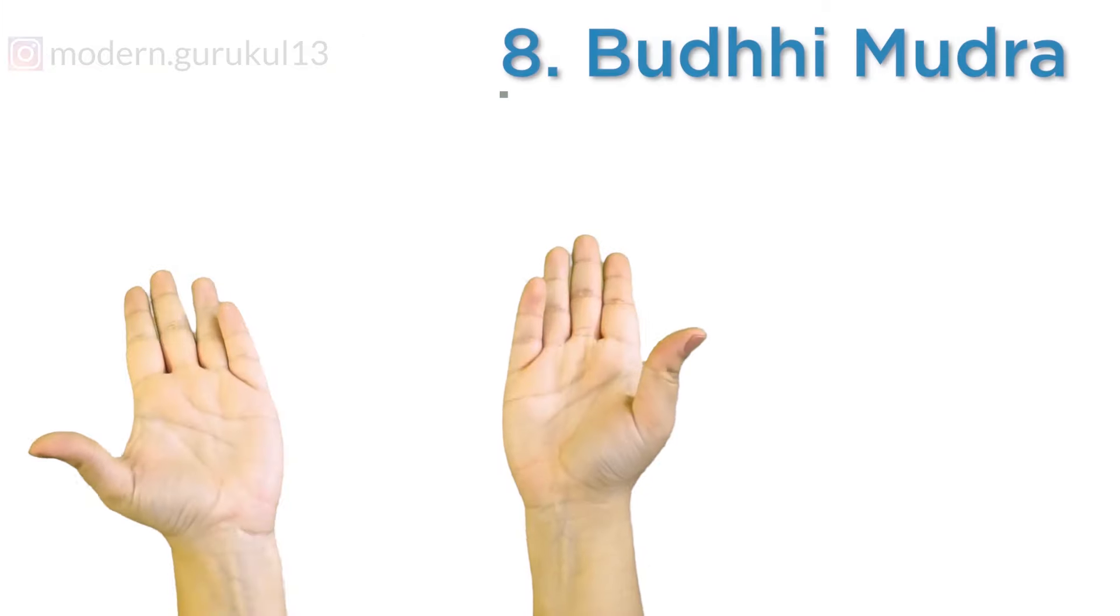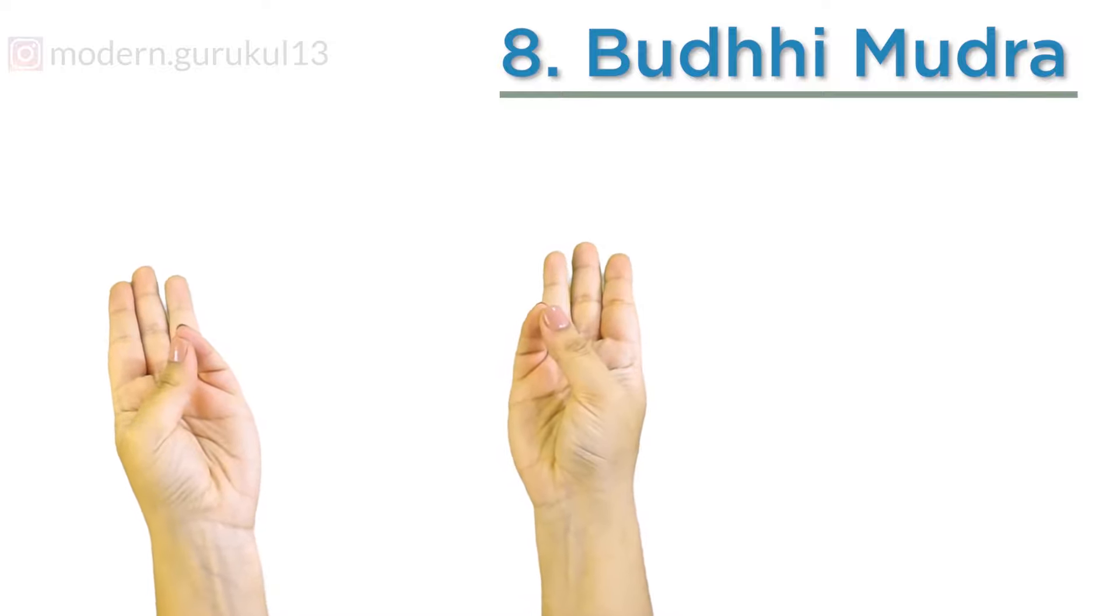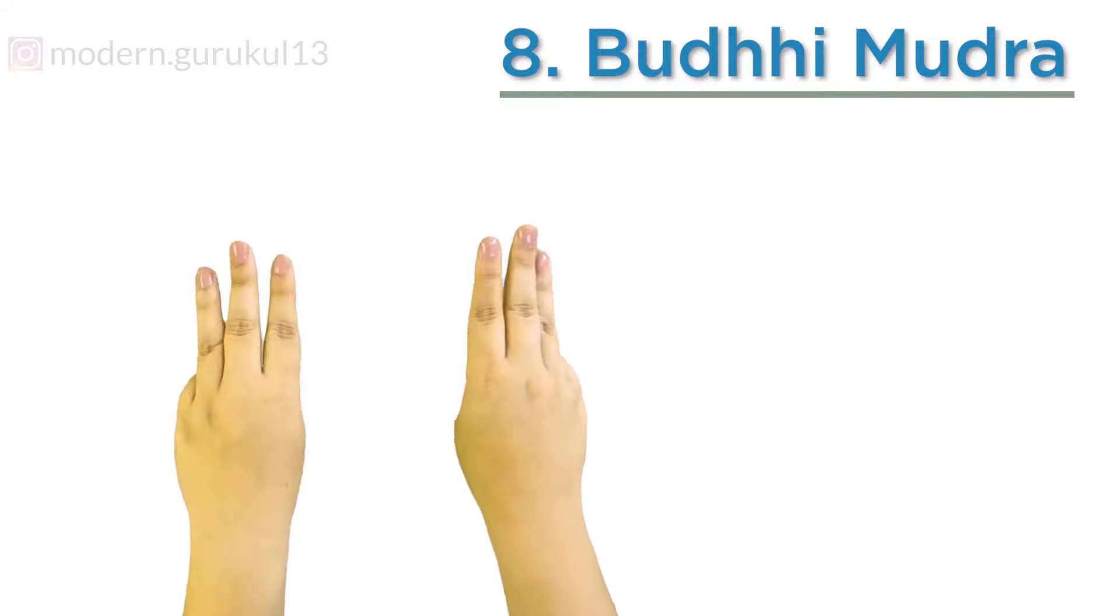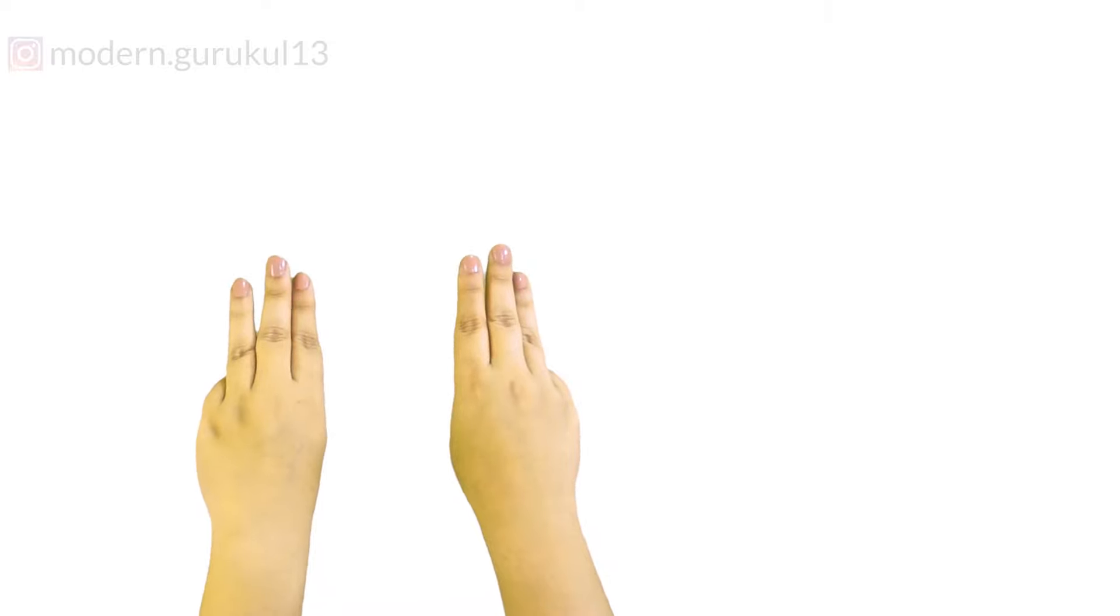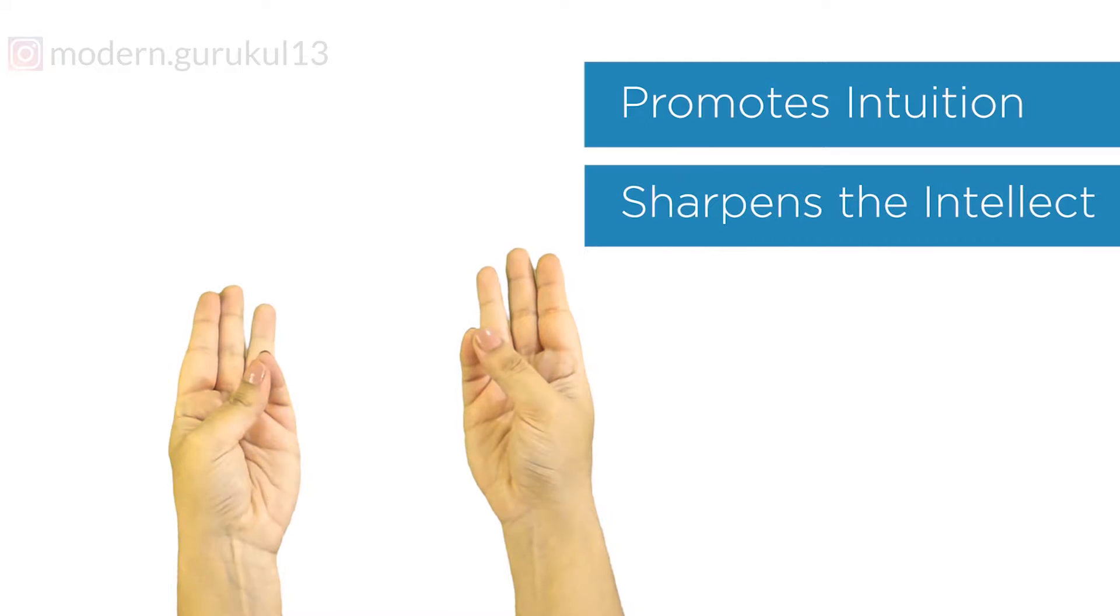Jal Mudra: The tip of the thumb touches the tip of the little finger and other three fingers are pointing outwards. It promotes intuition, sharpens our intellect, and it is useful for disorders related to kidney and bladder.